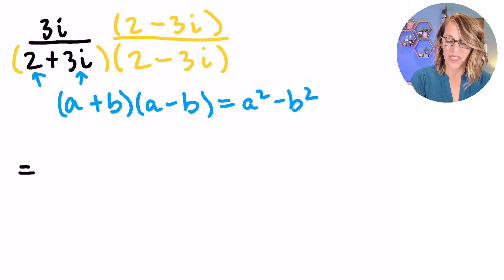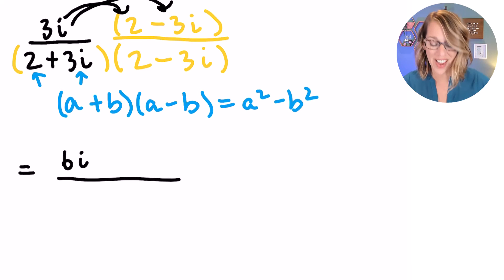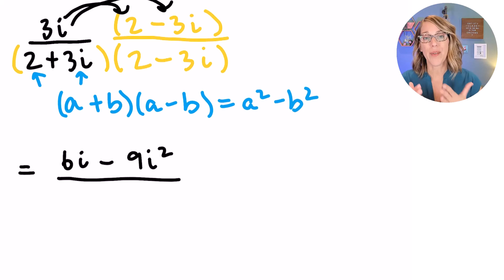So in my numerator, I'm going to start with the 3I times 2. That's going to be 6I. And then 3I times negative 3I, that's going to be negative 3 times 3 is 9I squared.